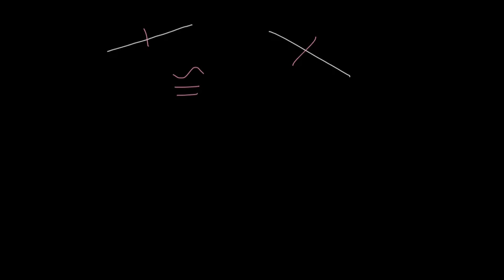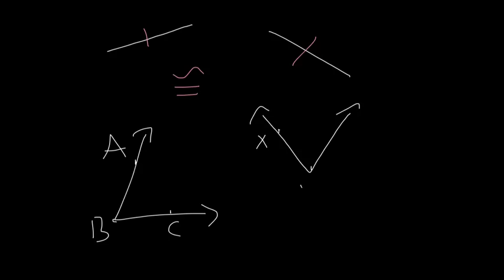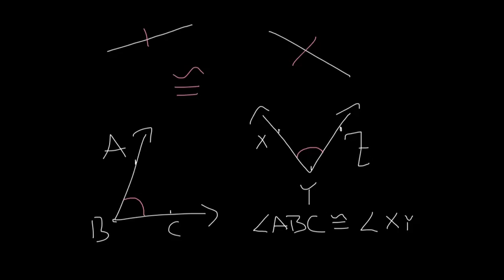Think back to when we talked about congruent line segments. If you had two line segments and they both had the same number of hash marks, we could say those segments were congruent. We can talk about angles in the same way. Let's say we had angle ABC and another angle XYZ. Now, instead of hash marks, we're going to have little arches. If angle ABC has one arch and angle XYZ has another arch, we know that the number of degrees each angle has is the same. So we're going to write that angle ABC is congruent to angle XYZ.